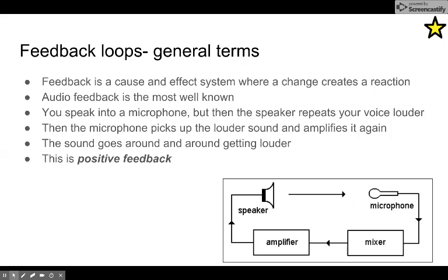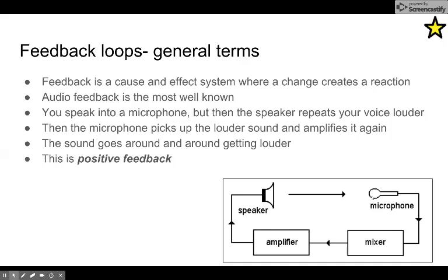I'm going to introduce feedback loops here and add to it later. Feedback is a cause-and-effect system where a change creates a reaction. The most familiar one is audio feedback, where a microphone and speaker squeal. You speak into the microphone, the amplified signal comes back, the microphone picks that up and amplifies it more, which goes back even louder. It goes so quickly that in a split second you go from a loud person talking to just that squealing shriek. This is called positive feedback.